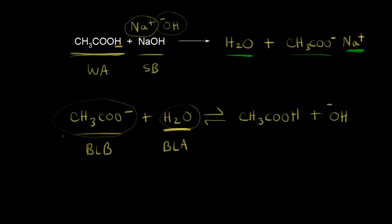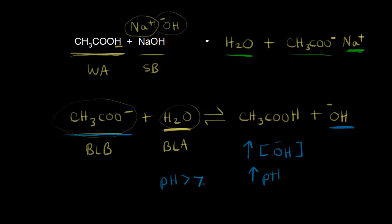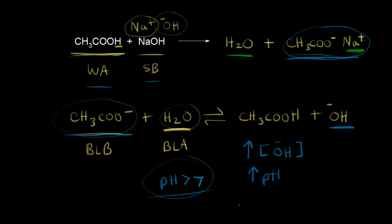The presence of acetate anions has increased the concentration of hydroxide ions in solution. So the pH is no longer seven — we've increased the pH. An aqueous solution of sodium acetate is going to have a pH greater than seven. In general, salts formed from a weak acid and a strong base form basic solutions with pHs greater than seven.